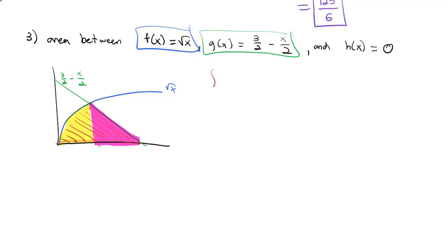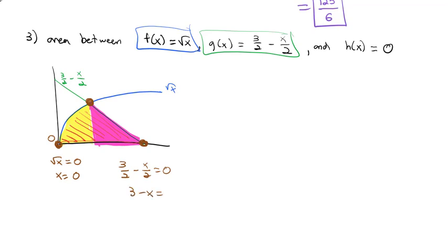We need to know where the graph starts, where they intersect, and where we hit the ground. The square root of x hits the x-axis at 0, so x equals 0 on the left. On the right, we set 3 halves minus x over 2 equals 0. Multiplying by 2 gives 3 minus x equals 0, so x equals 3 on the right.